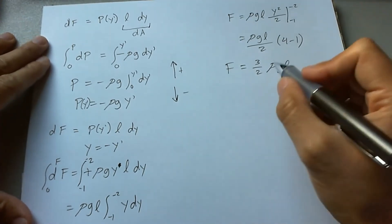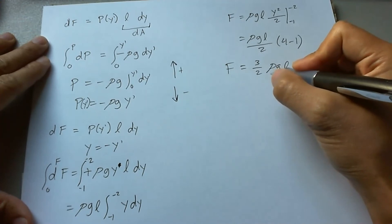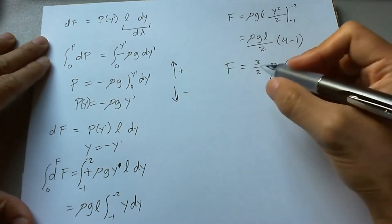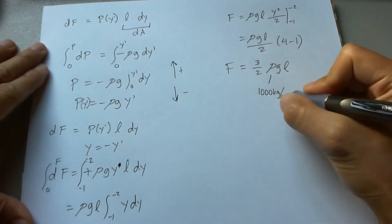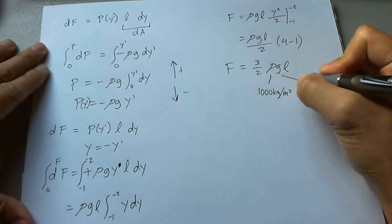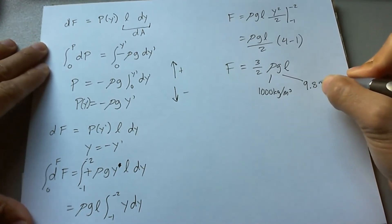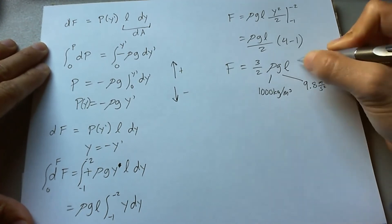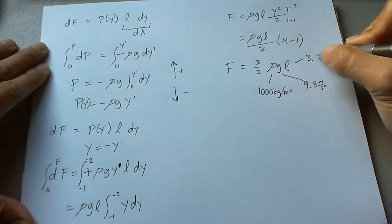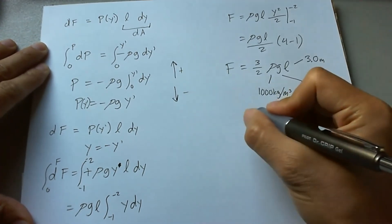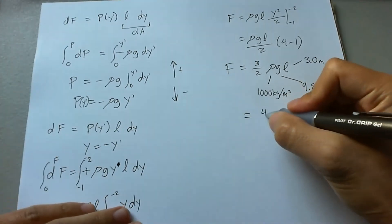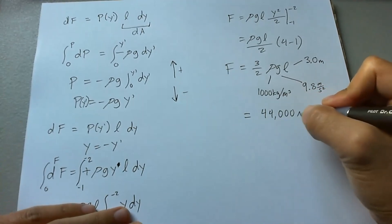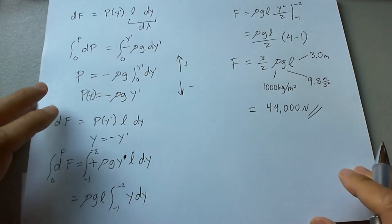Now, we're going to plug in the numbers and then we can finally solve for the problem here. So in this case, we'll make the density of water 1000 kilograms per meters cubed. We'll make the gravitational factor or the gravitational field 9.8 meters per second squared. And the length of the window ends up, as the problem states, three meters. So now we have, plugging all this in together, we're going to get 44,000 newtons for the final force on that window.